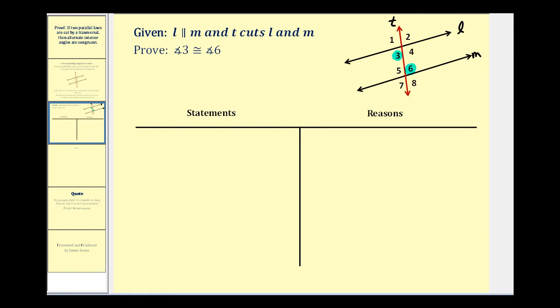Before we do the proof, we should think about our plan to show that these two angles are congruent. Remember, the corresponding angle postulate tells us that we can assume corresponding angles are congruent if we have two parallel lines cut by a transversal. So if we could somehow show that angle 3 is congruent to angle 2...